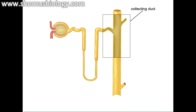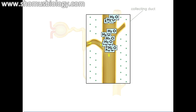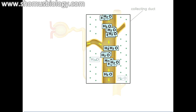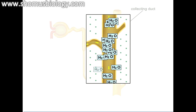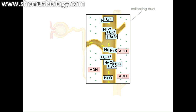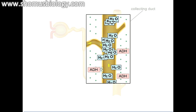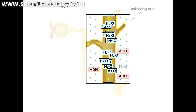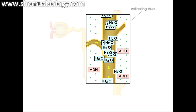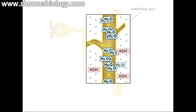When the filtrate reaches the collecting duct, most of the salt and water has already been removed. As it moves down the duct, the filtrate either becomes concentrated urine through further removal of water, or remains dilute. This process is controlled by ADH — anti-diuretic hormone. On a cool day when you are well-hydrated, your blood solute concentration decreases, and your kidneys decrease water reabsorption. Your pituitary gland releases less ADH, causing the collecting duct wall to become less permeable to water, producing very dilute urine.